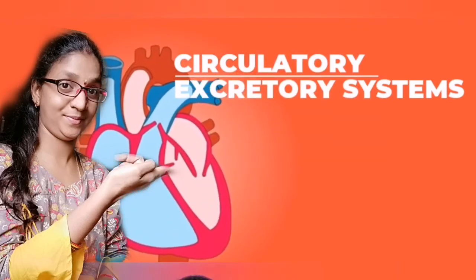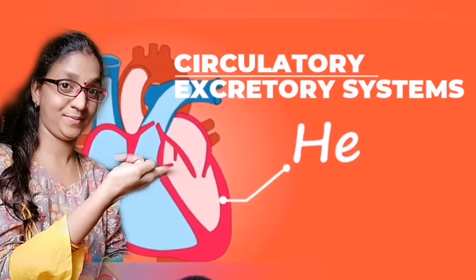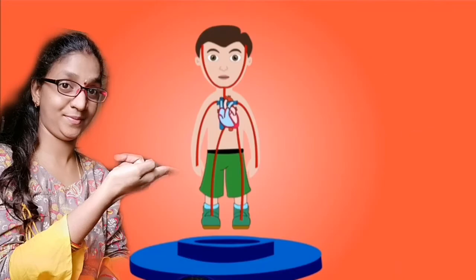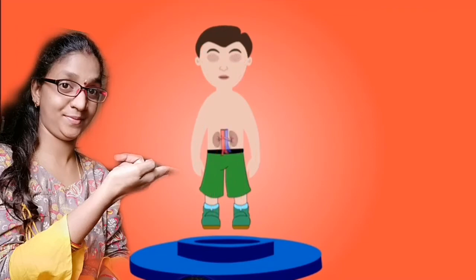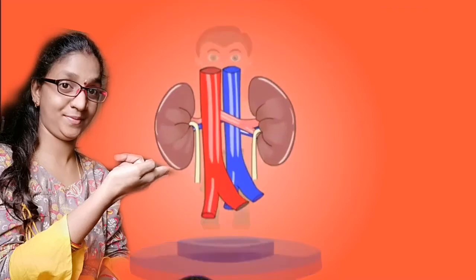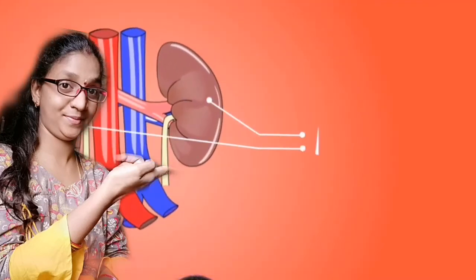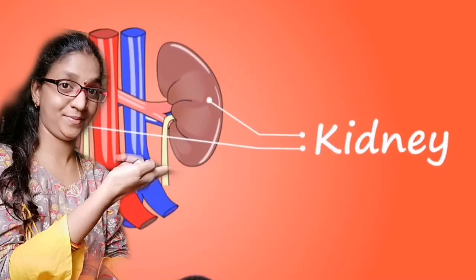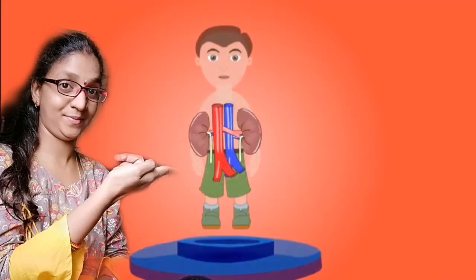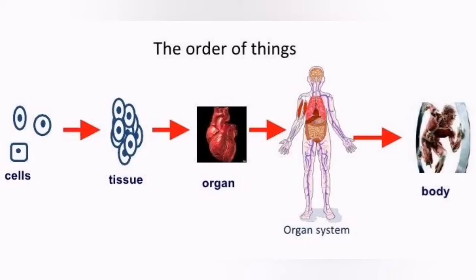Hello children, welcome to the science class. Today's topic is chapter 4, circulatory system and the excretory system. Before going to the circulatory and excretory system, I will explain you about the level of organization.